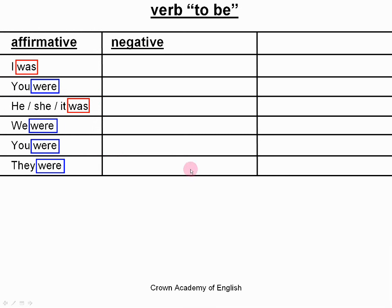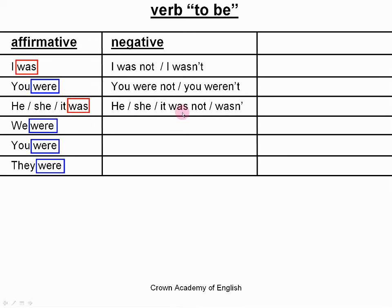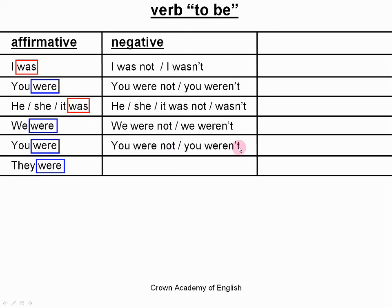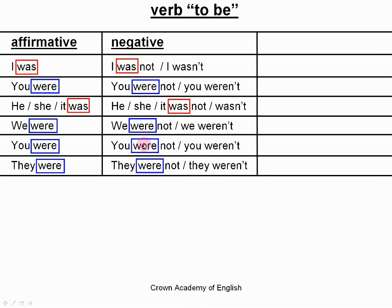The negative of verb 'to be': I was not, or the contracted form, I wasn't. You were not, you weren't. He, she, it was not, or wasn't. We were not, we weren't. You were not, you weren't. They were not, they weren't. Again, 'I' and 'he/she/it' take 'was', and the others take 'were'.